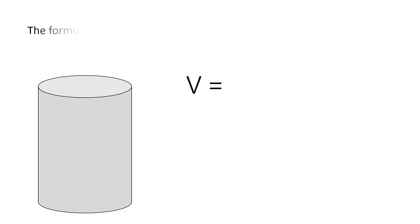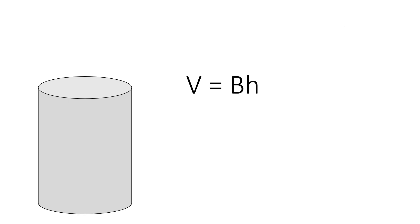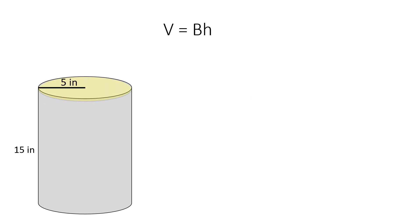The formula to find the volume of a cylinder is base times height. For this particular cylinder, let's assume the radius is 5 inches and the height is 15 inches. The base is basically the area of a circle, which is pi r squared times the height.